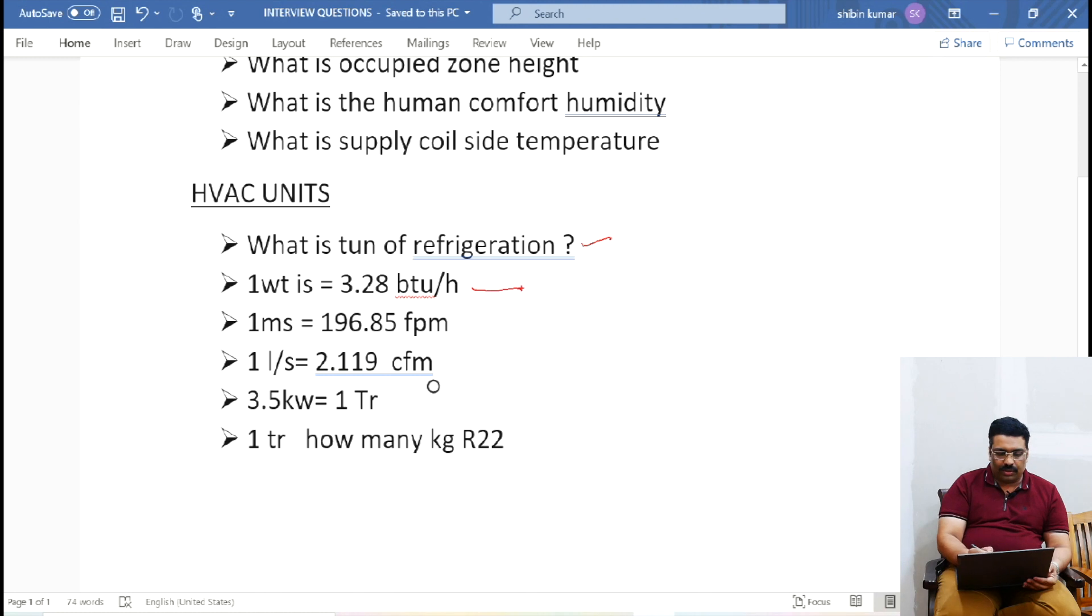One watt, how much BTU? 3.28 BTU. It's very important when you are doing calculations and how it is very important actually. And one meter per second is 196.85 feet per minute.